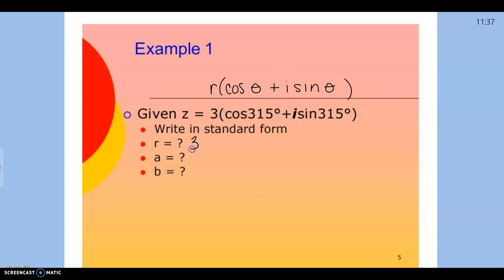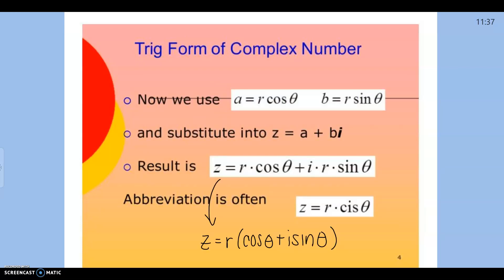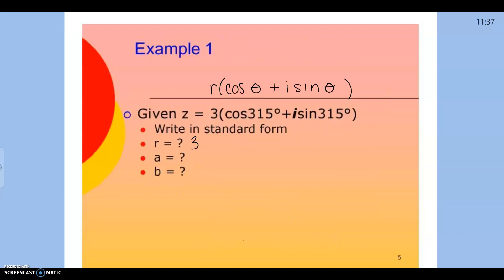In this particular case, R is going to be three. Remember that A is R cosine of theta and B is R sine of theta. So if A is R cosine theta, we're going to substitute in accordingly — R is three, and our theta is 315 degrees.